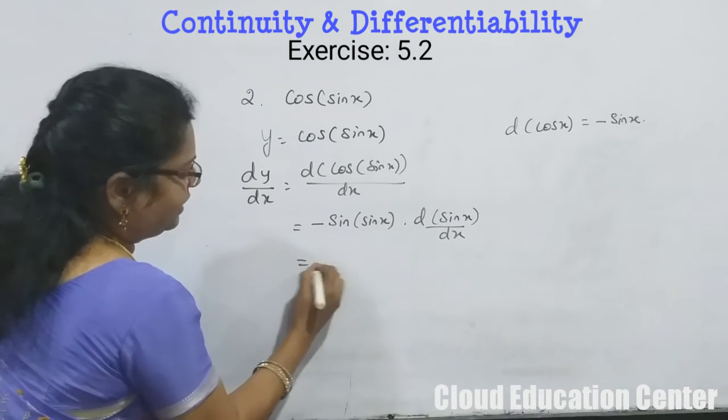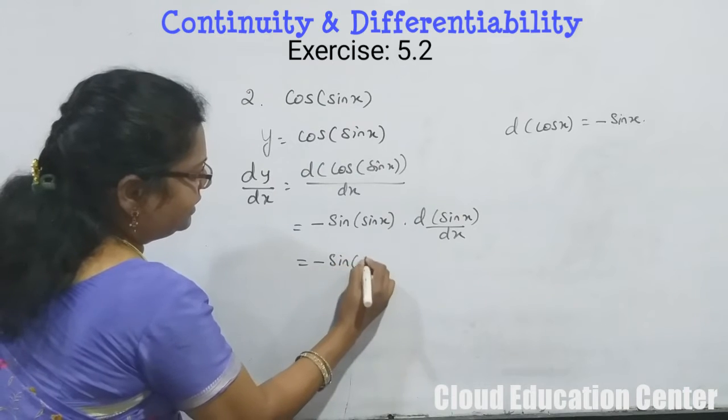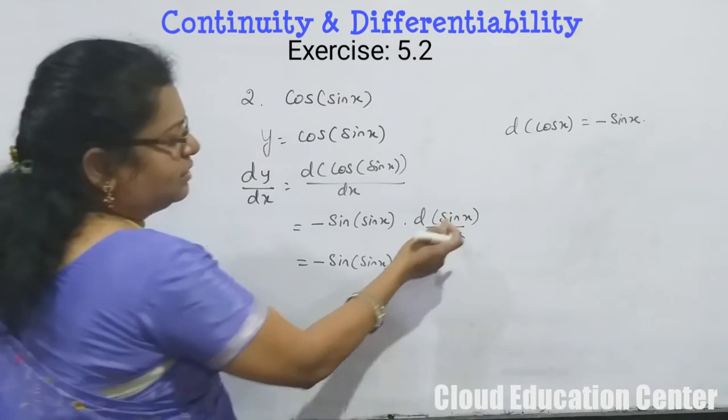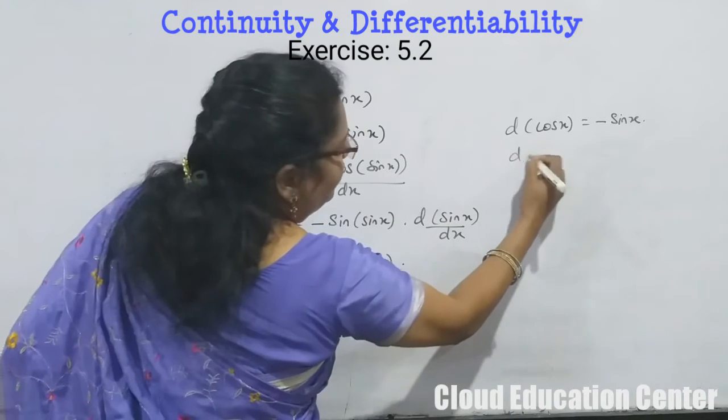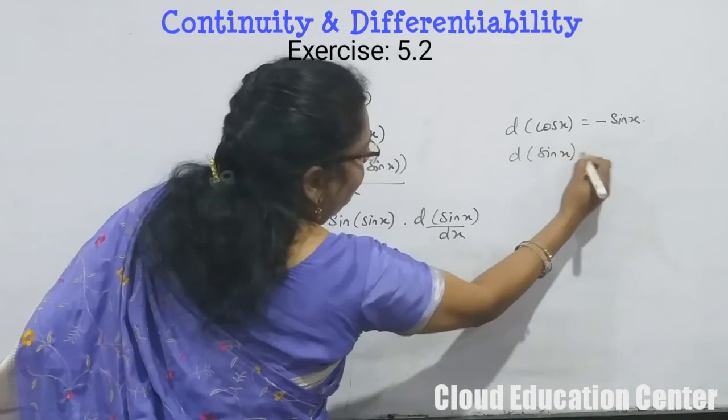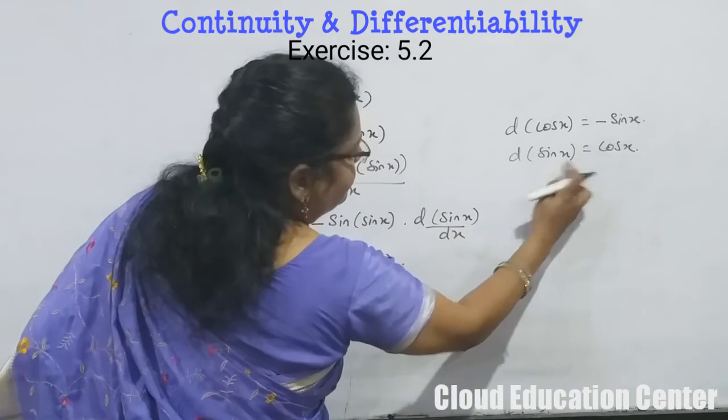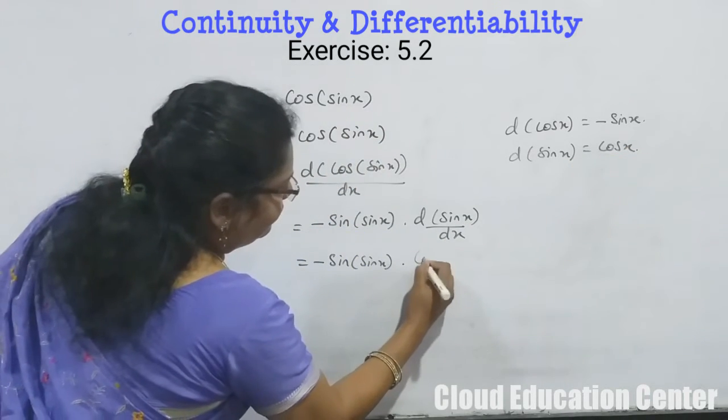This already we differentiated, we will write -sin(sin x) into this we have to differentiate now. This is simply sin x. So we know already the sin x differentiation formula is nothing but cos x. So if you have x is there, simply we can write it cos x.